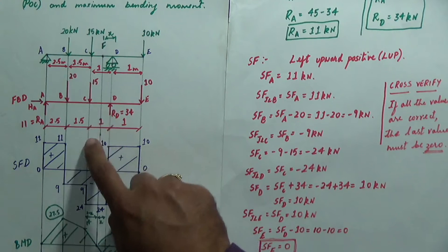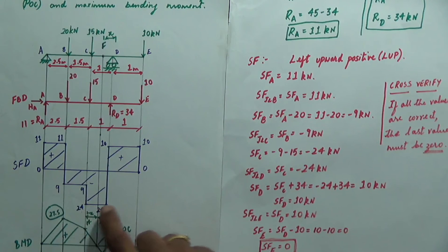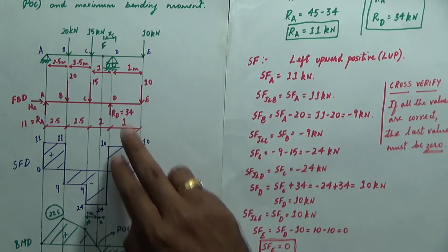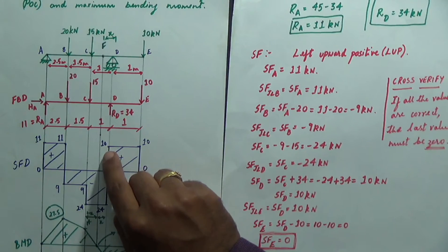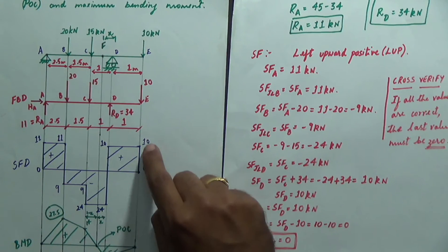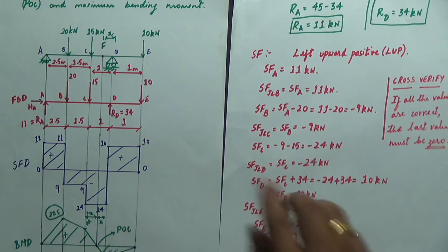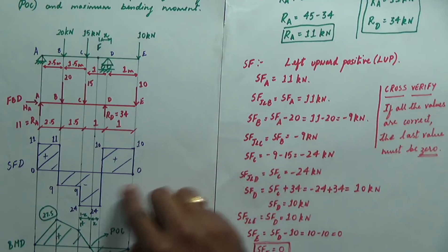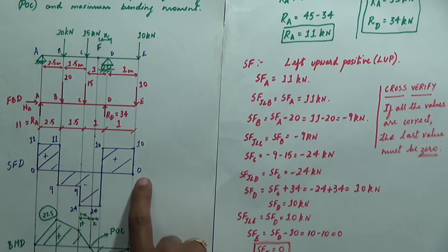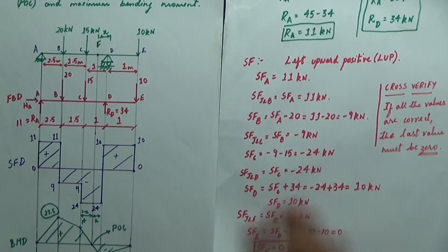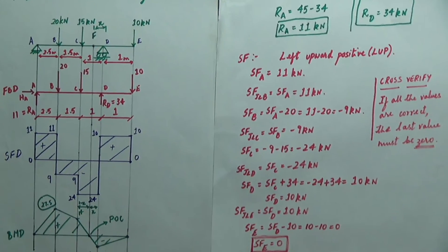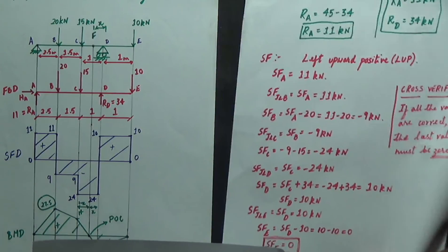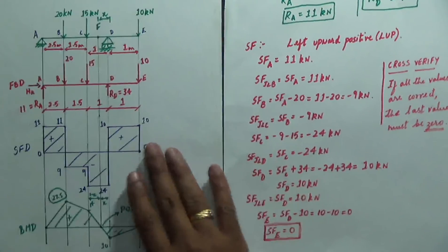Shear force at C = −9 − 15 = −24 kN. Shear force just left of D is −24 kN. Shear force at D = −24 + 34 = 10 kN. Shear force at E = 10 − 10 = 0. Cross-verification: if all values are correct, shear force at E must be 0. Initial and final shear force are both 0 — confirmed correct.